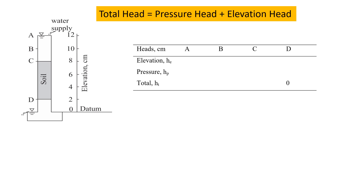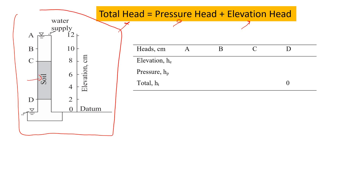Good day everybody. In this video I would like to talk about water flow in soil, and I will show you how we can estimate the basics of the flow. We'll talk about total heads, pressure head, and elevation head. I would like to start with one of my favorite examples where we have water flow through soil inside this container, all filled with water. Water flows from the top where we have constant water supply, then all the way down through the soil, through point D, and out at this level.